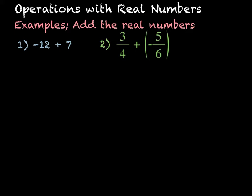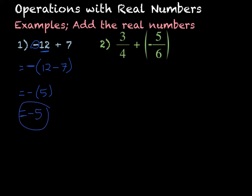For this first one, we have negative 12 plus 7. Since the bigger number, 12, is actually negative, I know my final answer is going to be negative. Then I just take 12 minus 7. 12 minus 7 is 5, so my answer is negative 5.